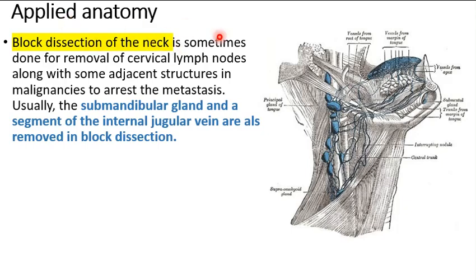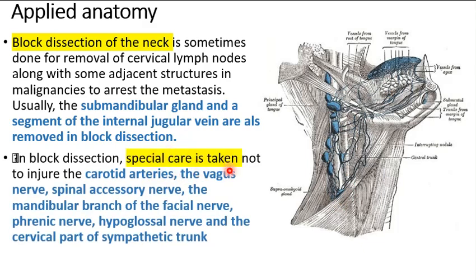Block dissection of the neck is sometimes performed for removal of cervical lymph nodes along with adjacent structures such as the submandibular gland and the internal jugular vein. Special care is taken not to injure the carotid artery, the vagus nerve, the spinal accessory nerve, the mandibular branch of the facial nerve, the phrenic nerve, the hypoglossal nerve, and the cervical part of the sympathetic trunk. Most of these structures can be remembered by their relations to the carotid sheath, since the lymph nodes lie along and around the internal jugular vein within it.